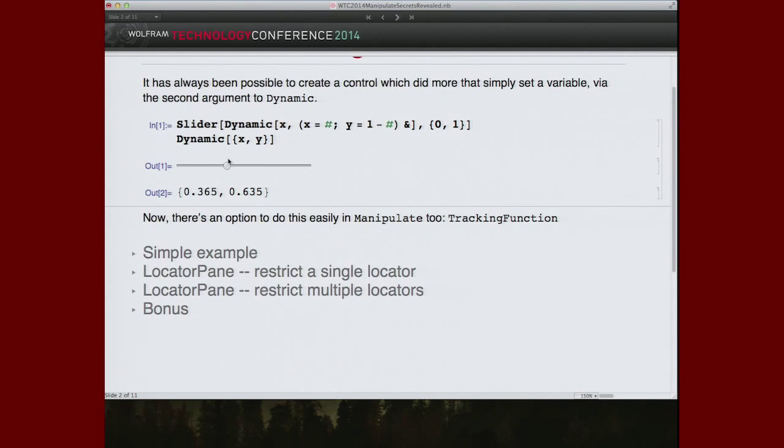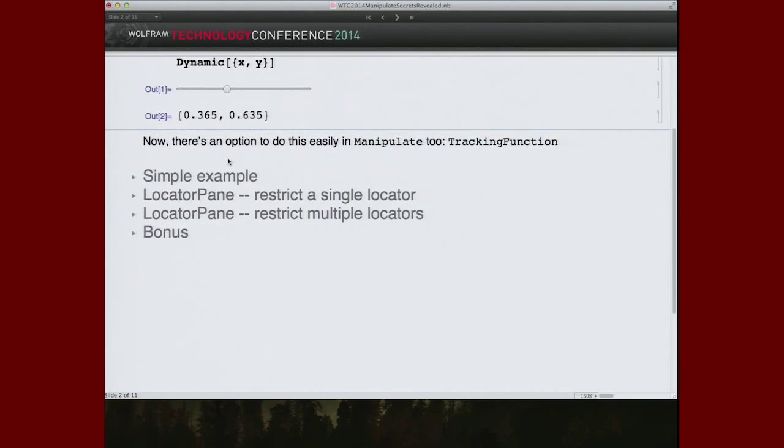So this can be useful for a variety of reasons. It's available for all of our controls, but it was never available in Manipulate. Manipulate's nice, short syntax didn't have a place for the second argument to dynamic, because there are no dynamics in Manipulate syntax. Typically, you don't specify dynamic.